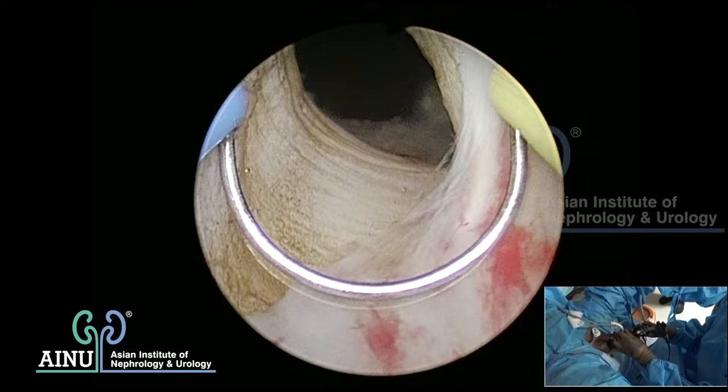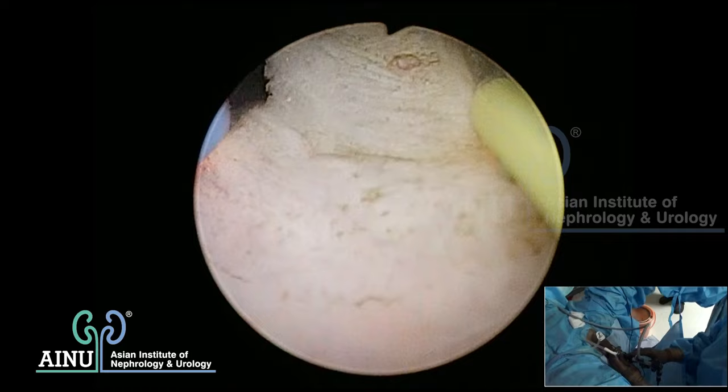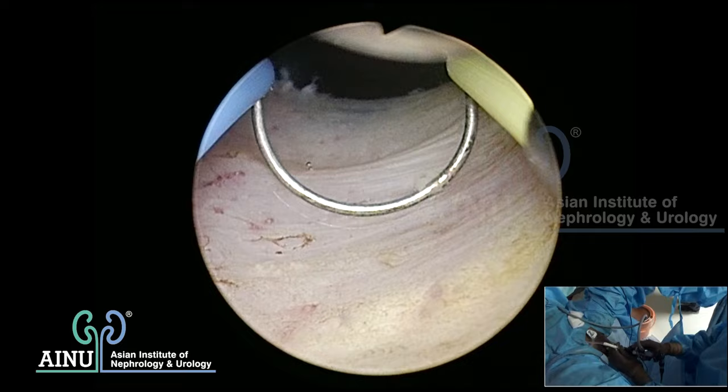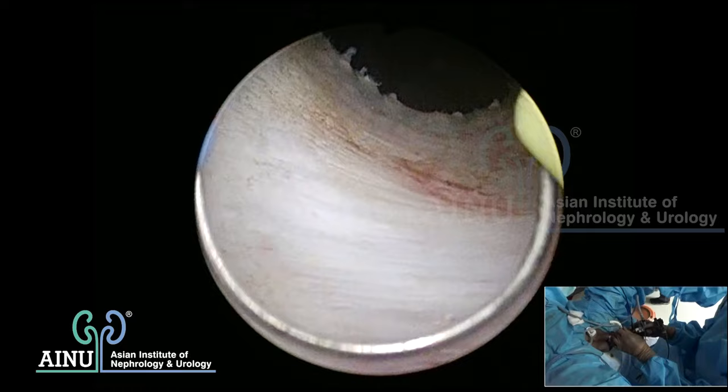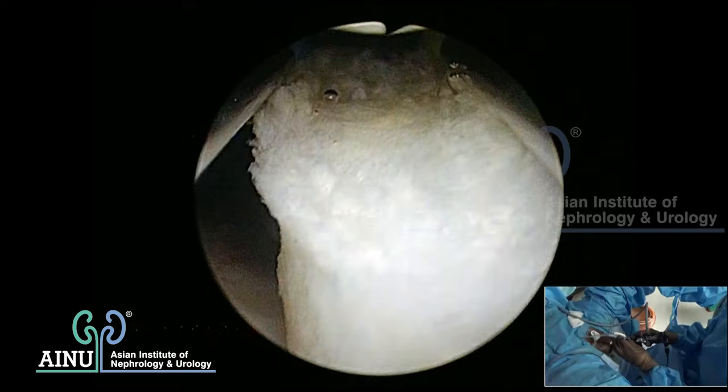After three cuts, you start seeing bladder neck fibers. I start doing the same on the other side. I did not find the vessel which usually comes at around 5 o'clock or 7 o'clock, but on either side I can see the bladder neck fibers. This is the median lobe sitting between the two grooves we created. Finding and coagulating that vessel gives a devascularized median lobe which can then be resected easily.